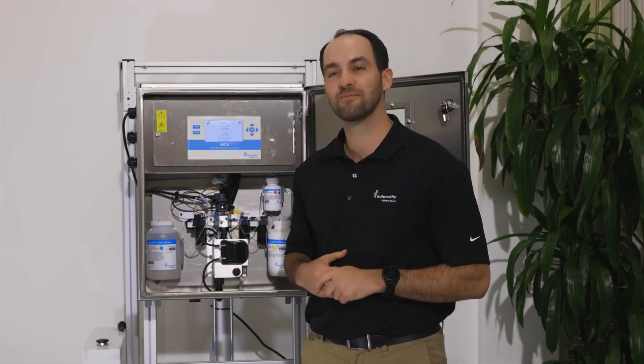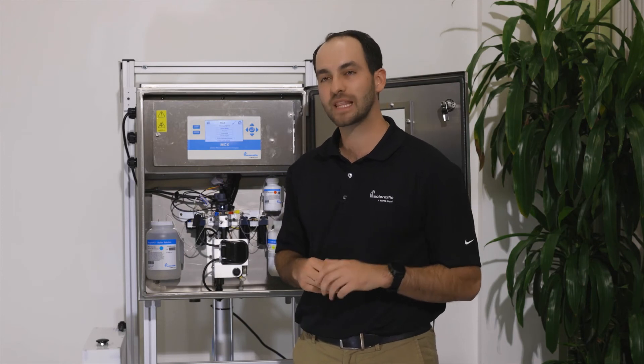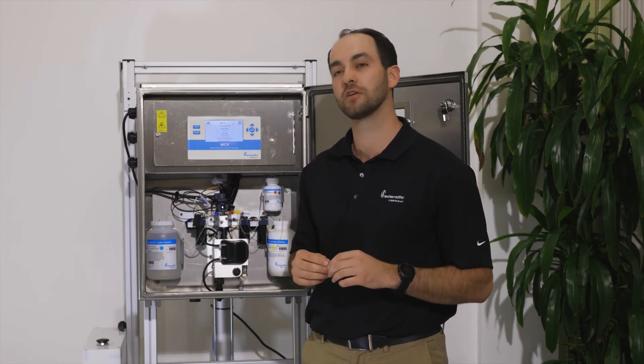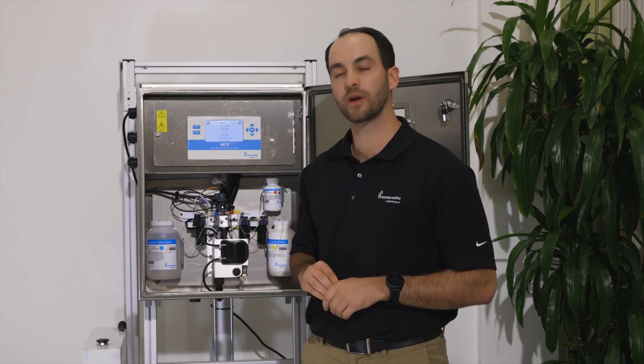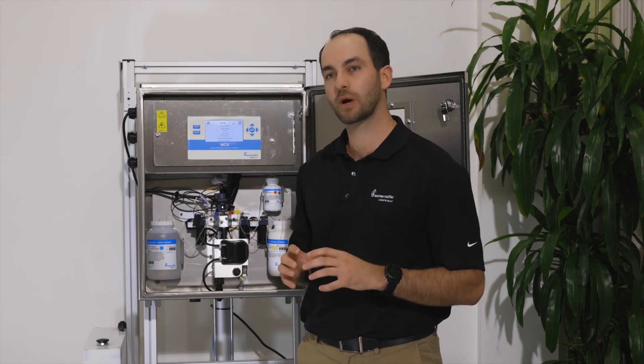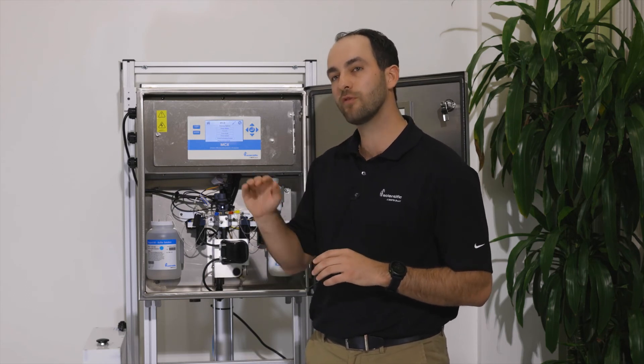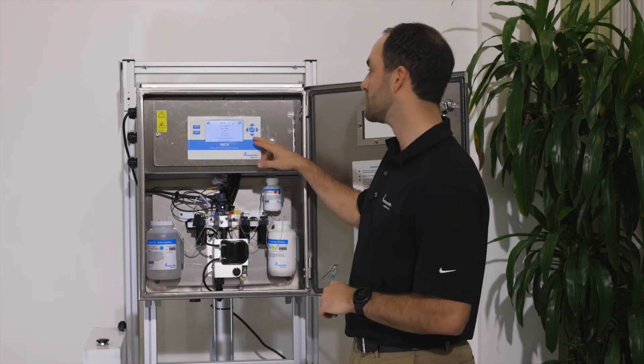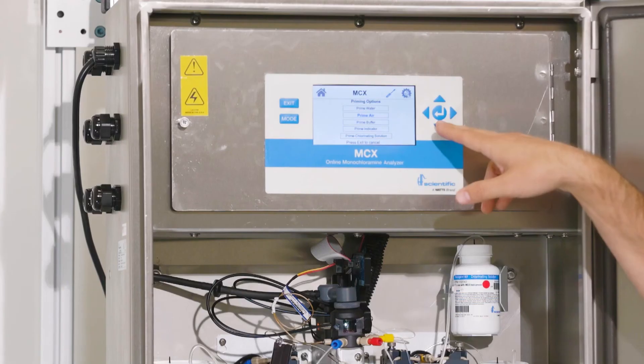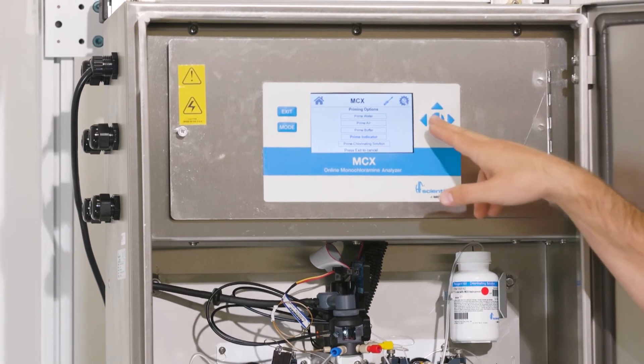The final reagent that we will prime is our indicating solution. The indicating solution is a tan color and it's the most viscous of all three reagents. We really want to make sure that we're seeing that tan color move all the way through the reagent lines and into the sample cell. So go up to your top screen, toggle down to prime indicator, and hit the enter button.